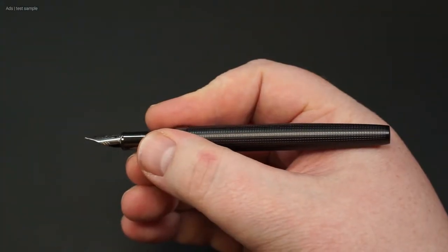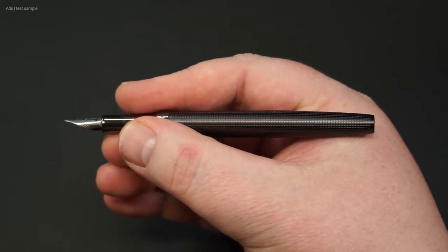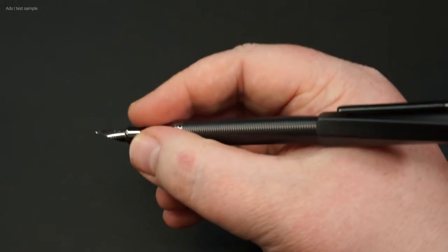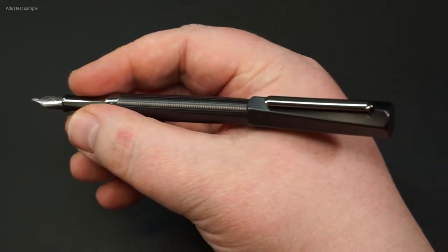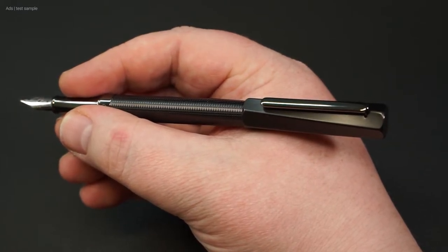In the hand, the fountain pen from Hugo Boss is quite good. It has a metal grip piece, which not everyone likes. But from the length and weight distribution, the pen is good. When you post the cap, the fountain pen becomes very heavy at the back, too heavy in my eyes. But you don't have to post the cap.